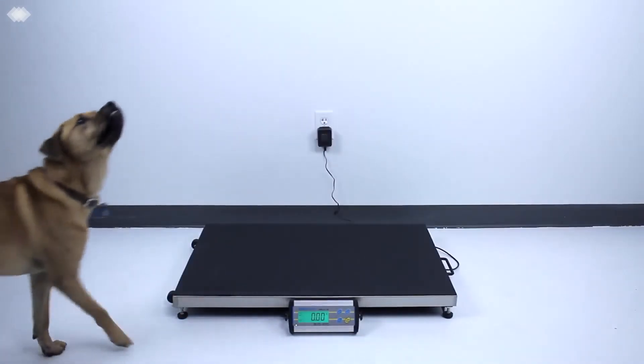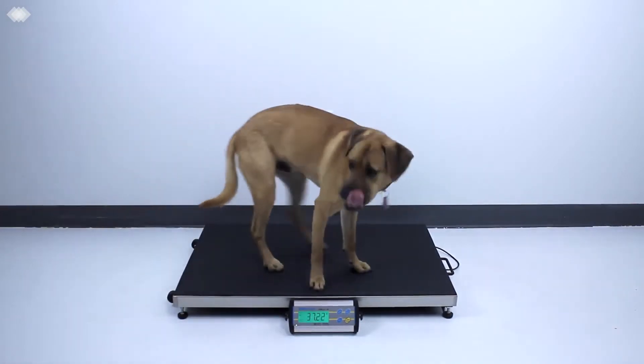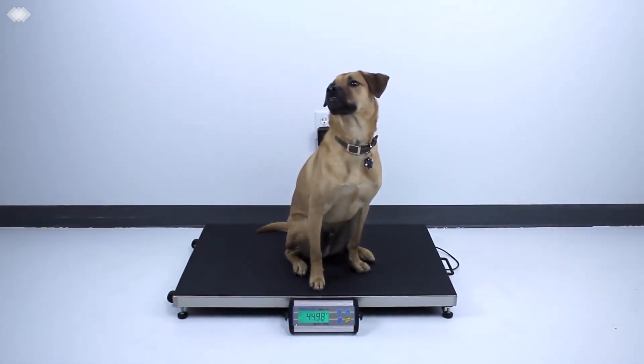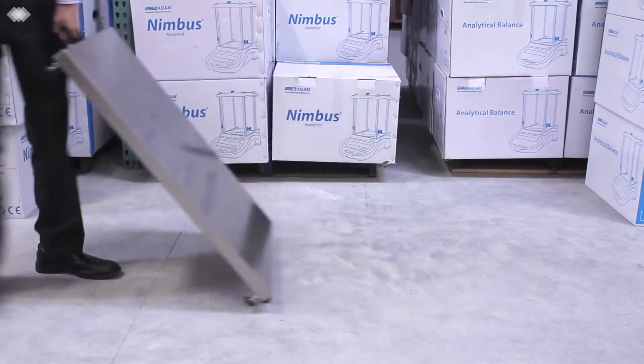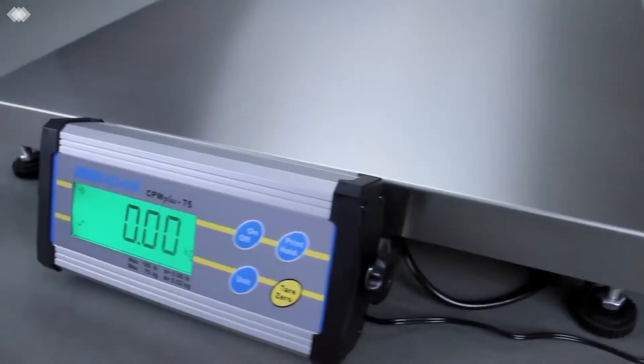Popular with veterinarians, CPW Plus L boasts a sizable stainless steel platform that is excellent for weighing large dogs or other animals. The handle and wheels allow the scale to be maneuvered easily in any setting.